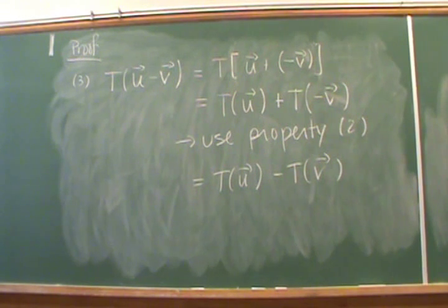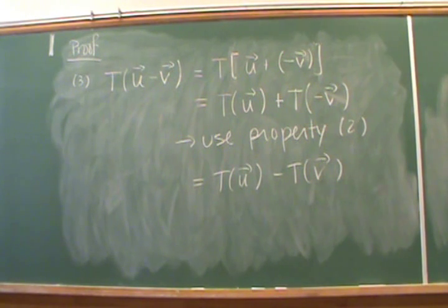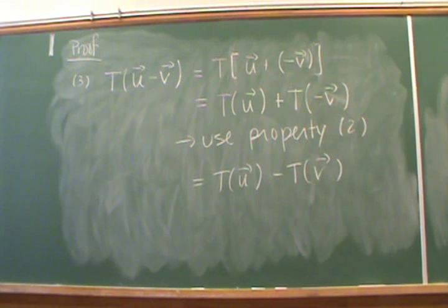Property three isn't too tricky. It gives us a way to break apart subtraction. We view U minus V as U plus the additive inverse of V, then use the fact that T is a linear transformation to break apart the U and the minus V. Finally, we use property two to rewrite T of negative V as negative T of V.